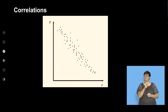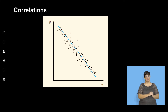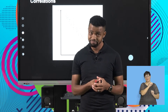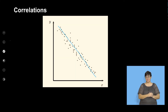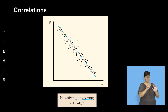What about this one? I can draw a straight line but with a negative gradient. The correlation is negative but strong. Let's see: we have negative and this is fairly strong, approximately negative 0.7. That's the correlation coefficient.